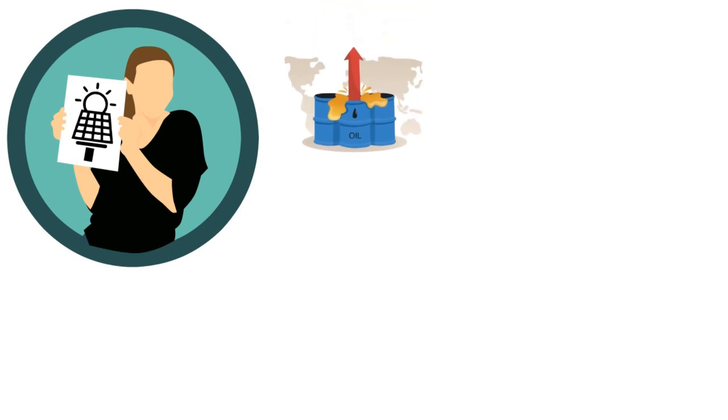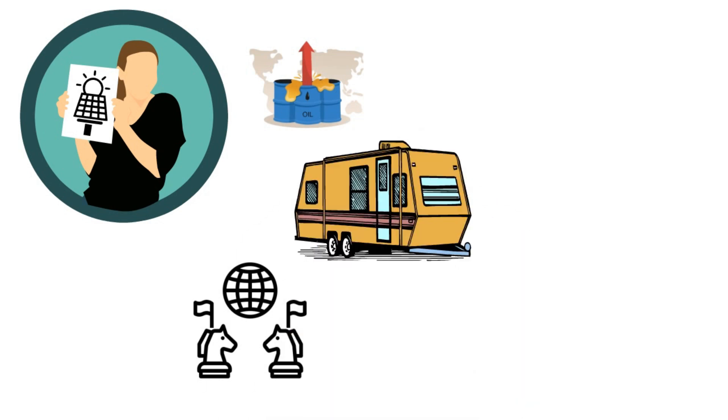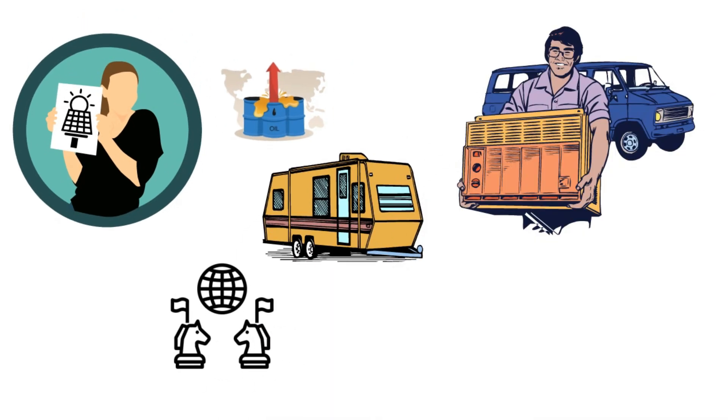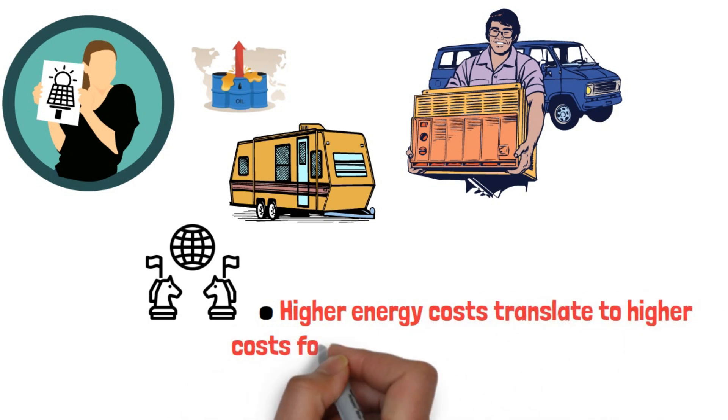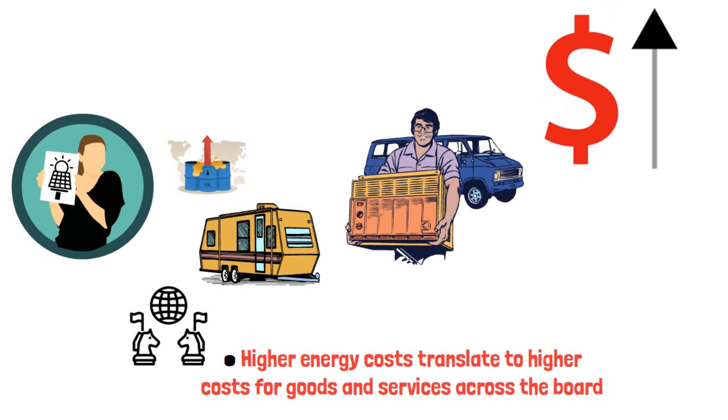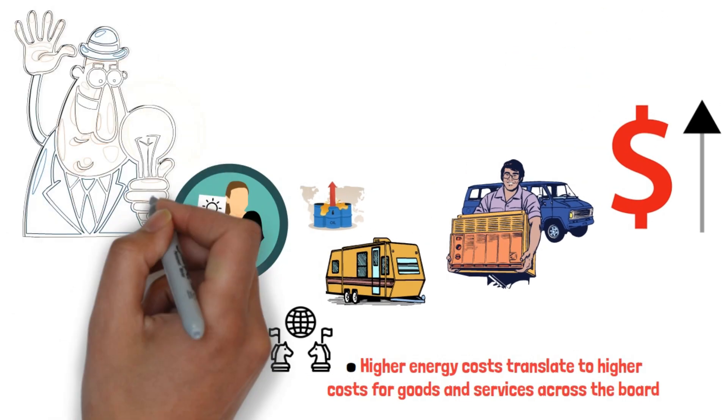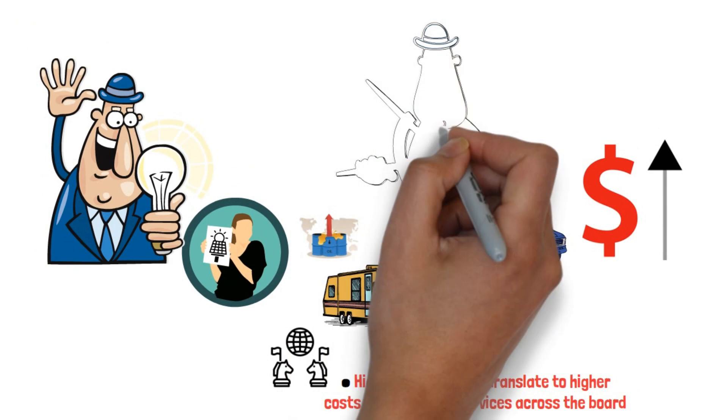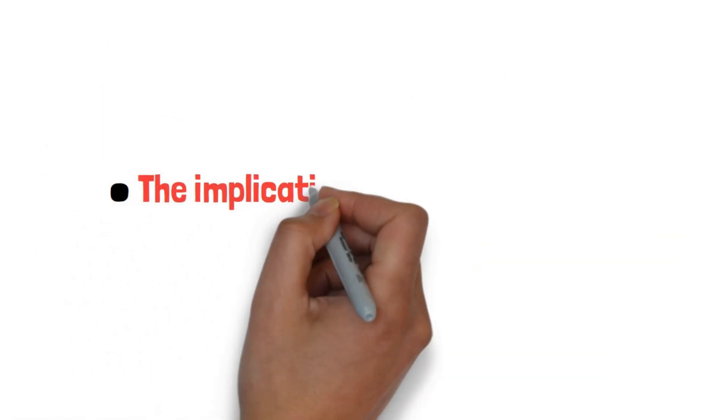Energy prices are another critical factor contributing to inflation. The volatility in oil and gas prices, driven by geopolitical tensions and supply constraints, has had a direct impact on the cost of living. Higher energy costs translate to higher costs for goods and services across the board, as transportation and production costs rise.